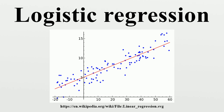Logistic function, odds, odds ratio, and logit. Definition of the logistic function: An explanation of logistic regression can begin with an explanation of the standard logistic function. The logistic function is useful because it can take an input with any value from negative to positive infinity, whereas the output always takes values between 0 and 1 and hence is interpretable as a probability. Assuming t as a linear function of a single explanatory variable, the logistic function can be written accordingly. Note that the output is interpreted as the probability of the dependent variable equaling a success or case, rather than a failure or non-case. The response variables are not identically distributed; the probability differs from one data point to another, though they are independent given the design matrix and shared parameters.